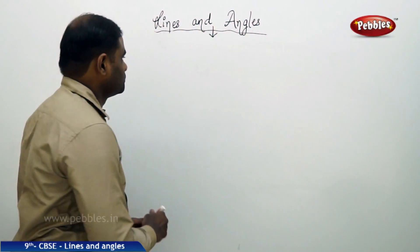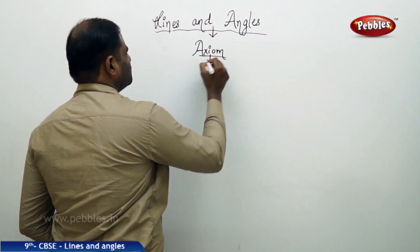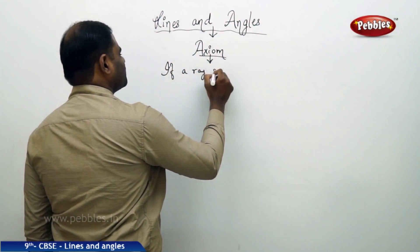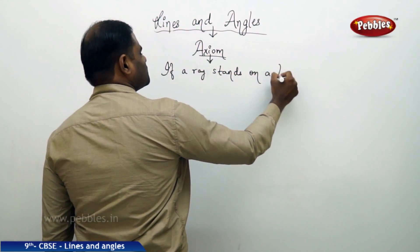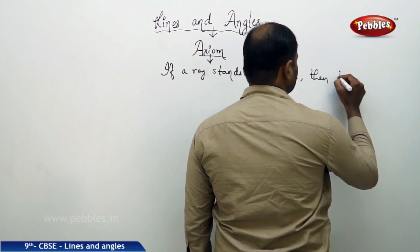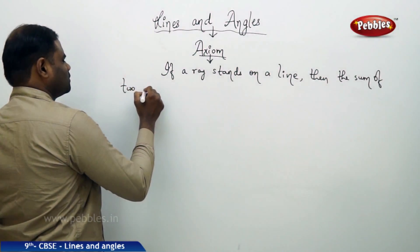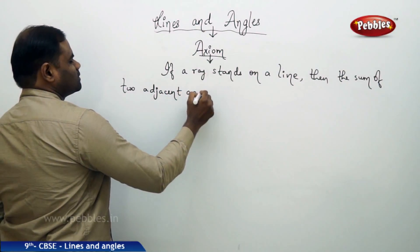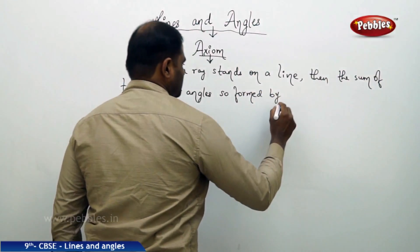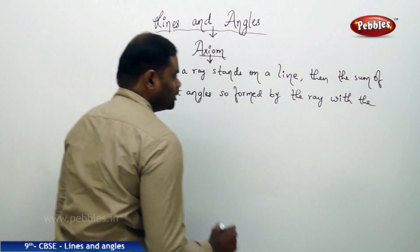An axiom with its own definition. This axiom says: if a ray stands on a line, then the sum of two adjacent angles so formed by the ray with that straight line...